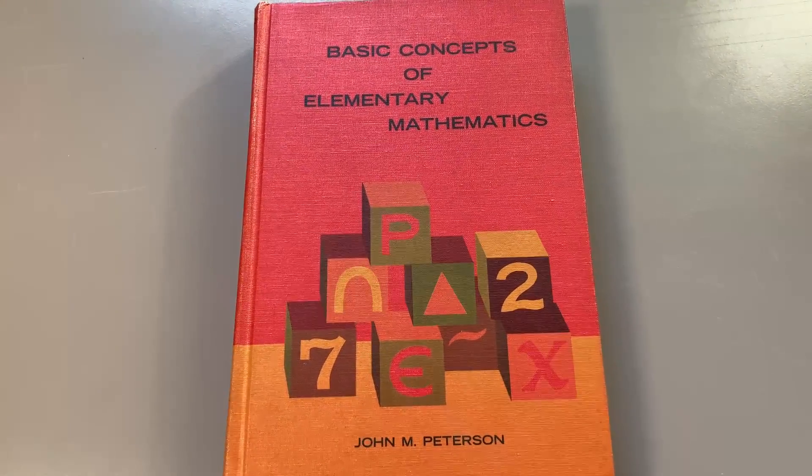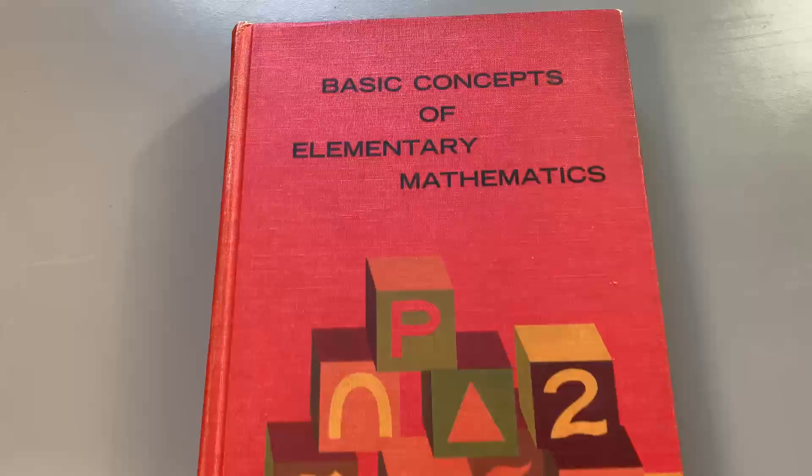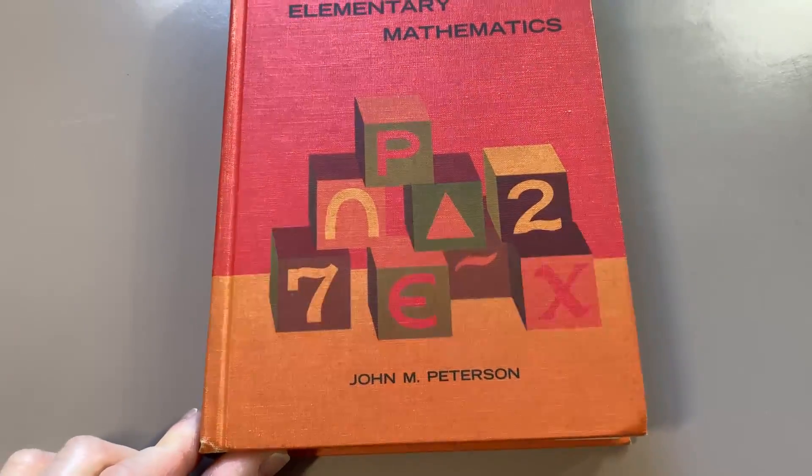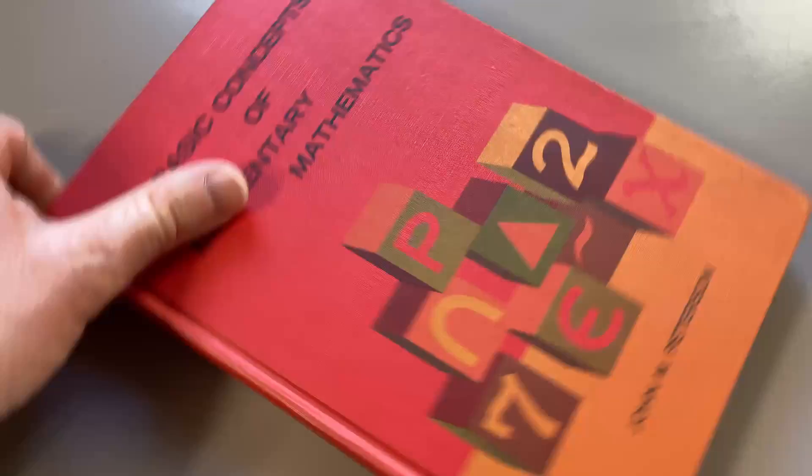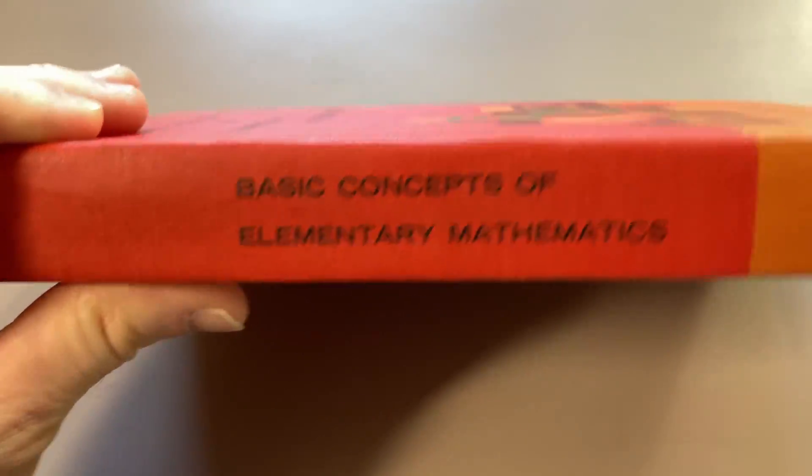Collecting math books is really fun because you run across all kinds of books. This book is pretty different. It's called Basic Concepts of Elementary Mathematics, and it was written by John Peterson. I think this book has a really cool cover. Yeah, really nice.